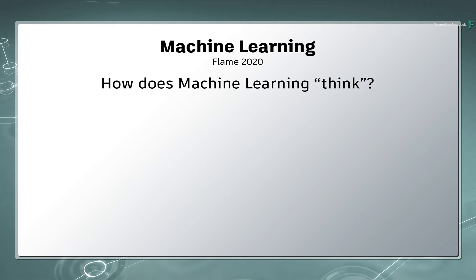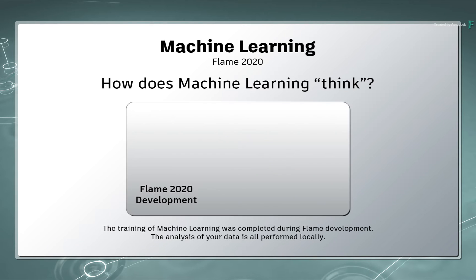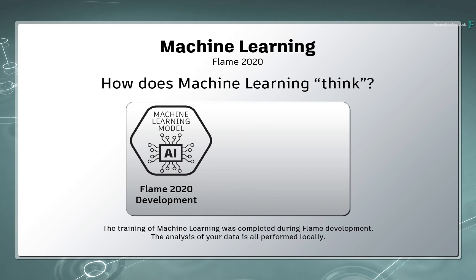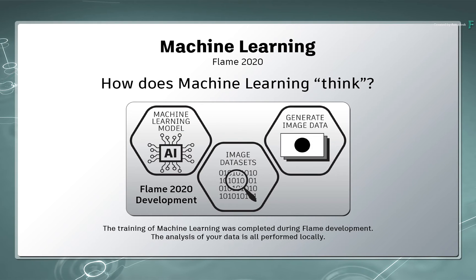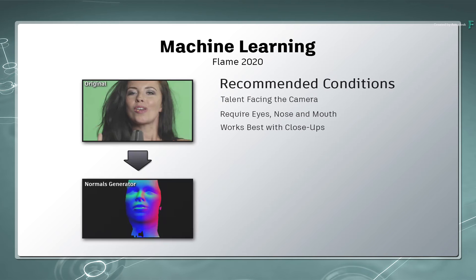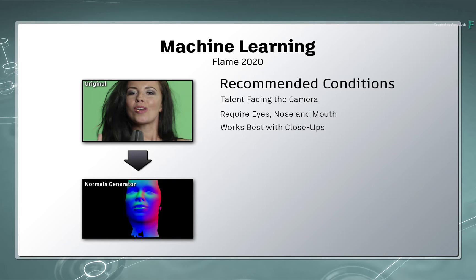So how does machine learning think? During the development of Flame 2020, a set of algorithms referred to as the Machine Learning Model were fed loads of images called datasets, in order to understand what it is looking at and produce a result. It is impossible to give the model every possible scenario you may encounter. However, the more the dataset is focused, the better the likelihood of a more accurate result.